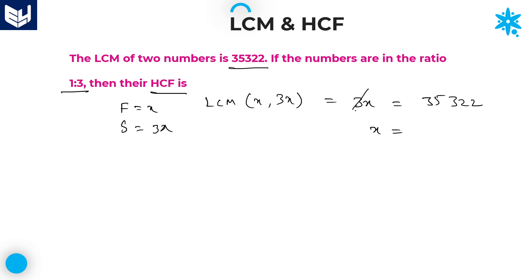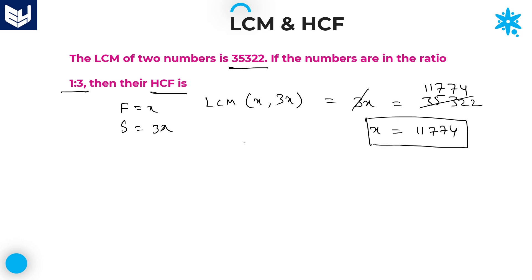From this, x = 35322 / 3. Cancelling with 3, x = 11174. The question asks for the HCF of x and 3x. The common factor in these two numbers is x. So the value of x, which we calculated as 11174, is the required HCF of the given numbers. That is the answer for this question: 11174.